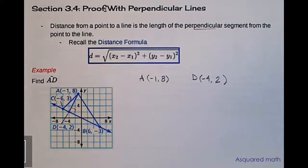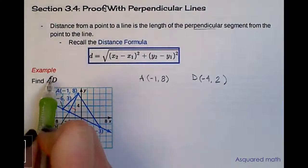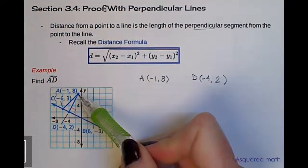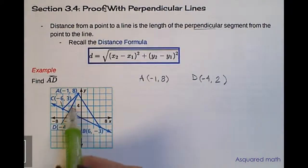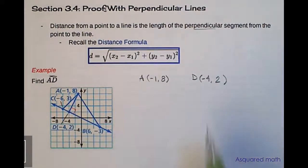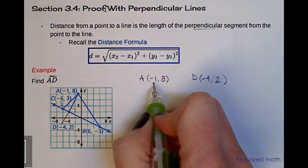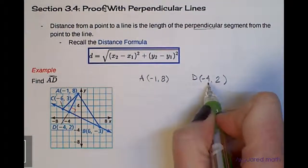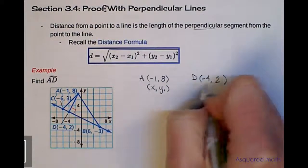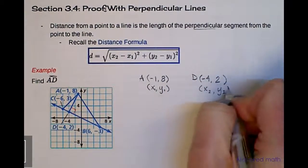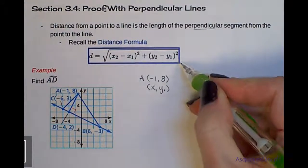The example we are going to look at: we're given this picture here and we are asked to find the length of line segment AD. Point A is here and D is on this line. We're looking for this perpendicular segment because that's going to be the shortest distance from this point down to the line. Point A has the coordinate (−1, 8) and point D has the coordinate (−4, 2). We're going to take this as our x1, y1 and x2, y2 and plug these values into the distance formula.